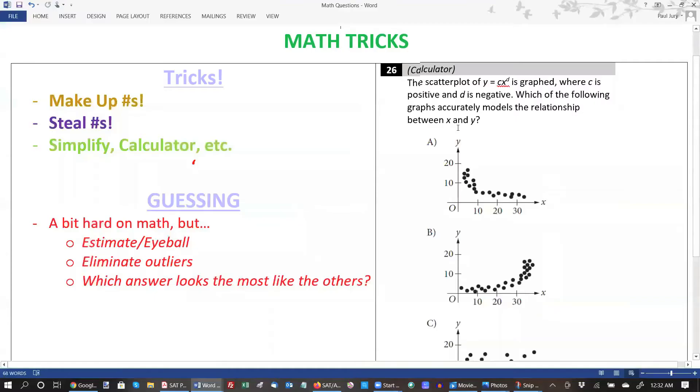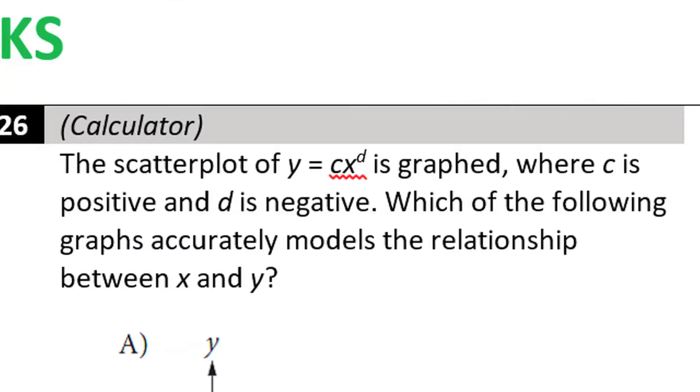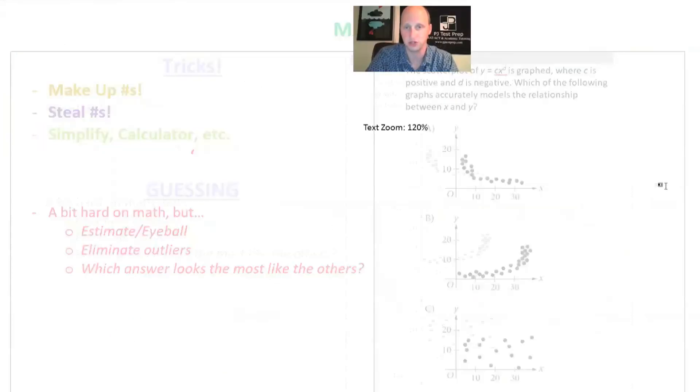But as always, guys, there's also a trick way to do these problems. If you are looking at a problem like this one here, the scatterplot of y equals, oh god, I don't remember how to do this math at all. What the heck graph is this supposed to be? There are shortcuts that you can use.